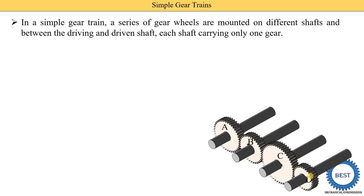The second type is a compound gear train, for which I will make a separate video. In a compound gear train, more than one gear — two or three gears — are mounted on a single shaft, and that is called a compound gear train.